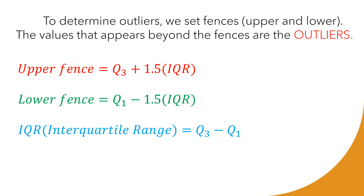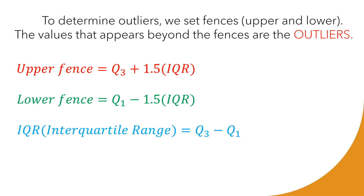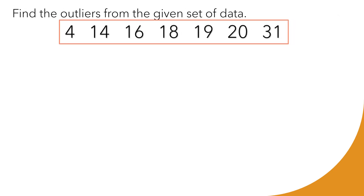Let us have an example. Find the outliers from the given set of data: 4, 14, 16, 18, 19, 20, and 31. Our data are already arranged ascendingly. In case they are not, we should arrange them properly first.